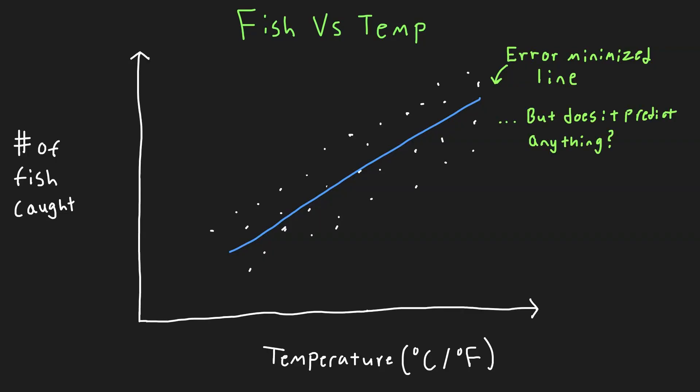But how useful is it? Well, we need to know how well it actually helps us predict the number of fish Matthew can expect. There are a few statistical methods we can use to see how well it will predict our data. One of them, perhaps the most common and well known, is the R squared one.